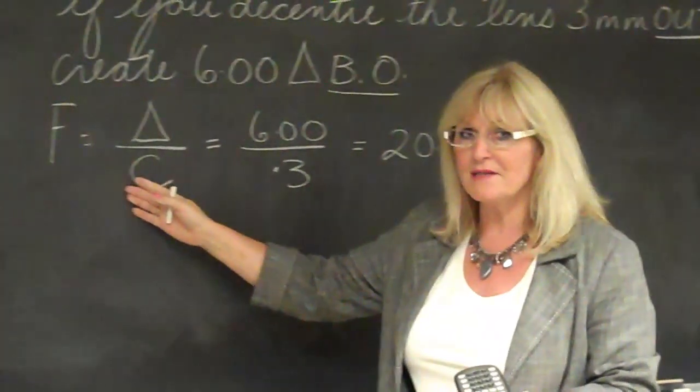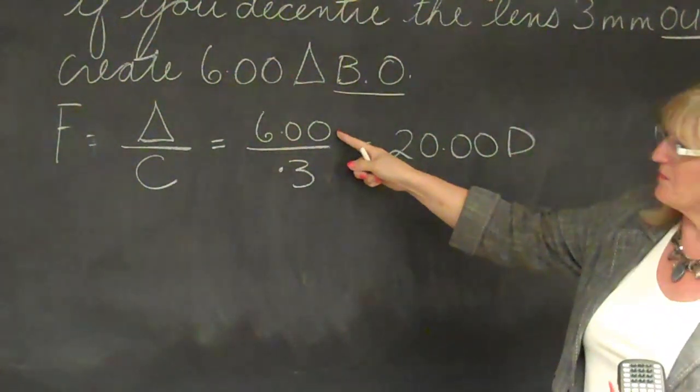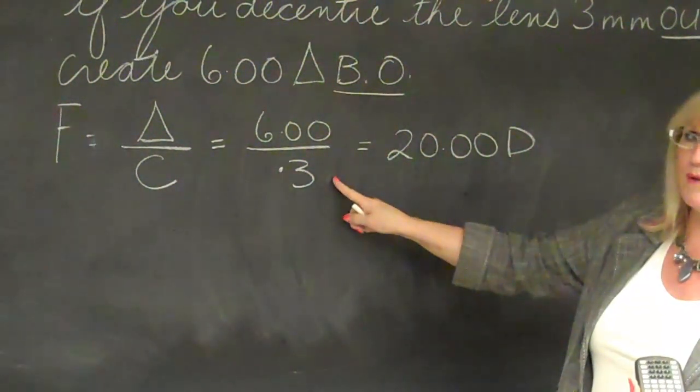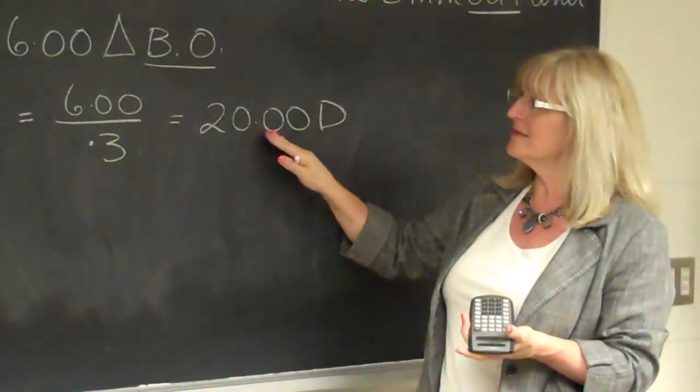So, apply Prentice's rule: F is equal to prism over C. There's your prism. Six prism diopters divided by 0.3 will give you an answer of 20 diopters exactly.